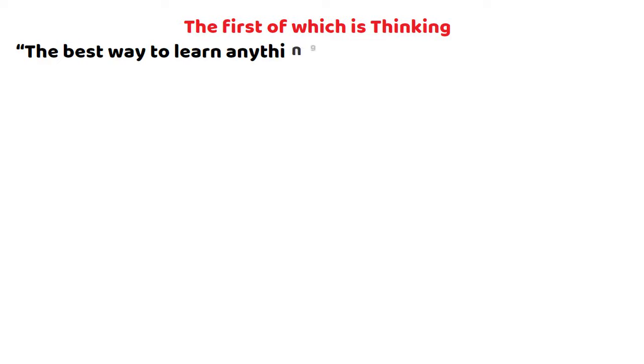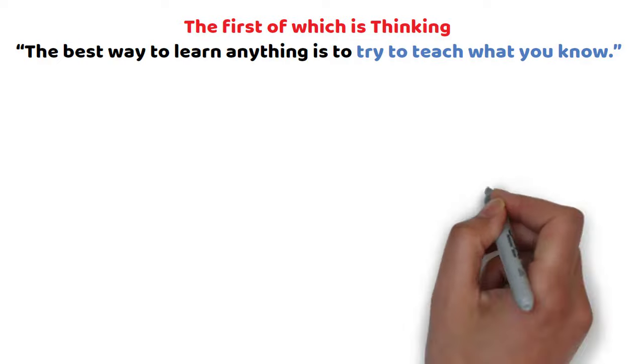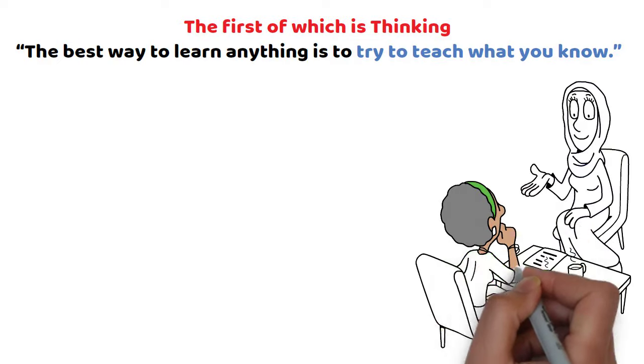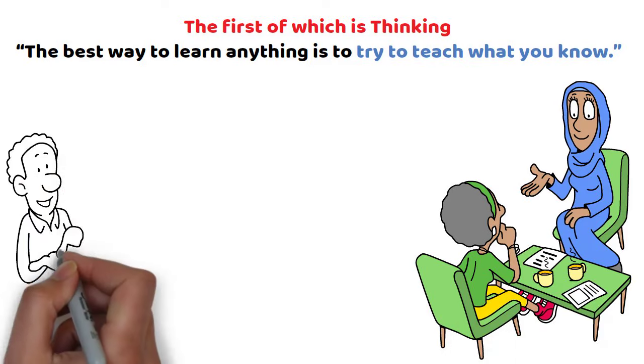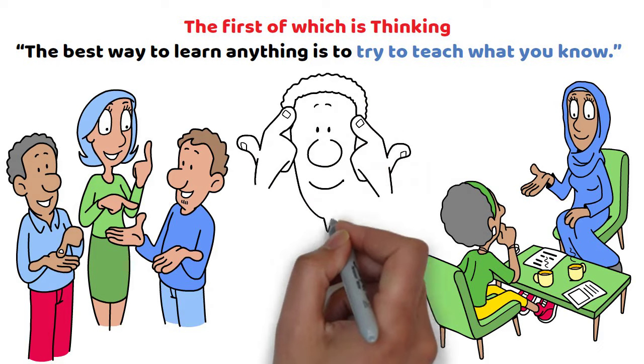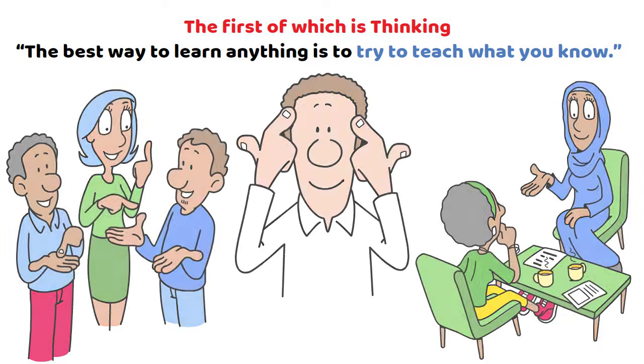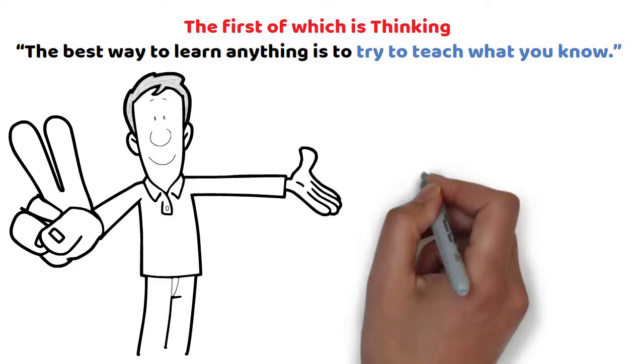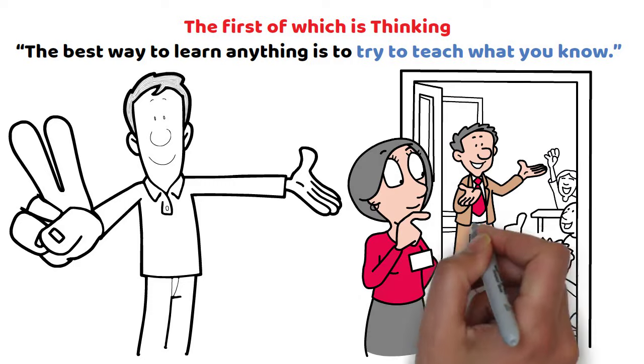The best way to learn anything is to try to teach what you know. When you attempt to convey knowledge to someone else, you often need to clarify concepts, provide explanations, and answer questions, which can reveal gaps in your own comprehension. Teaching becomes a two-way process that enhances both the teacher's and the learner's knowledge.